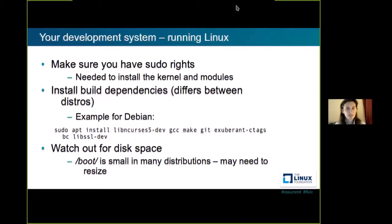Make sure you do have root rights on your machine because you need it for kernel installation and module installation. You will need to install dependencies that differ between distributions. The example I give is from my last setup of a Debian system, but look for instructions for your distribution — they are usually very easy to find. One difficulty people often run into is a 'no space left on device' message during installation, which quite often comes from the boot partition being quite small on many distributions. So watch out for that — if you're installing from scratch, make sure it's bigger, or resize and remove old kernels if necessary.